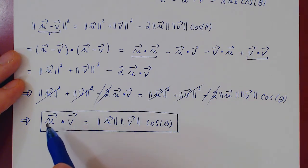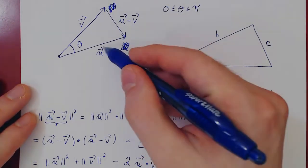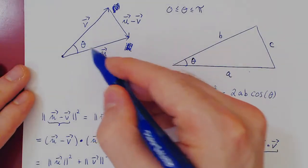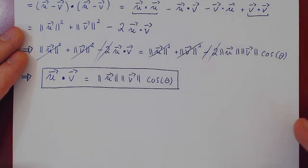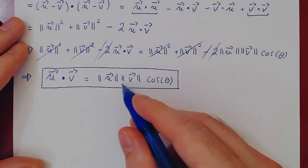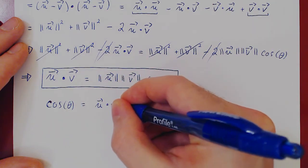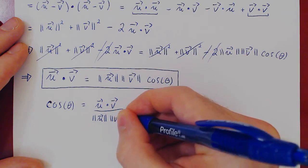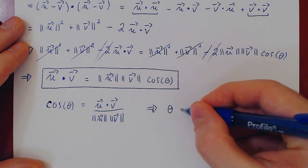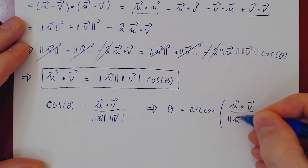Algebraically, we multiply corresponding entries of u and v and add them up. Geometrically, it is the product of the norm of u with the norm of v times the cosine of the angle between vectors u and v — and this is the geometry of the dot product. If we want the angle between the two vectors, we isolate: cosine of theta equals u dot v over the norm of u times the norm of v. Taking the arc cosine, the angle is given by arc cosine of the dot product divided by the product of the two norms.